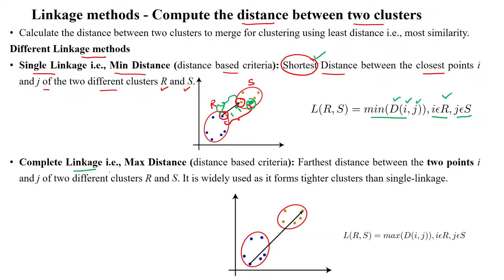Another distance metric is complete linkage, also called maximum distance metric. This metric is used to calculate the farthest distance between two data points i and j available in two different clusters r and s. We calculate the distance between each and every data point across the two clusters, and the pair of data points — one from r and one from s — that have the maximum distance is selected. This metric finds the maximum distance between data points i in cluster r and j in cluster s.